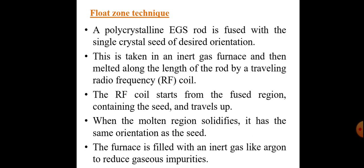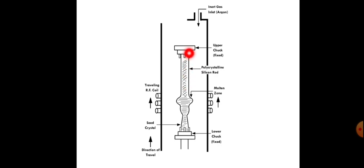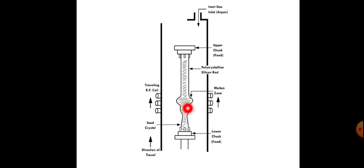In the float zone technique, the raw material is polycrystalline electronic grade silicon. A traveling RF coil is used for heating purposes. The electronic grade silicon contains some impurities. The solubility of impurities in the molten state is higher. Once we move the RF coil, the region below solidifies and the impurities move into the molten zone.